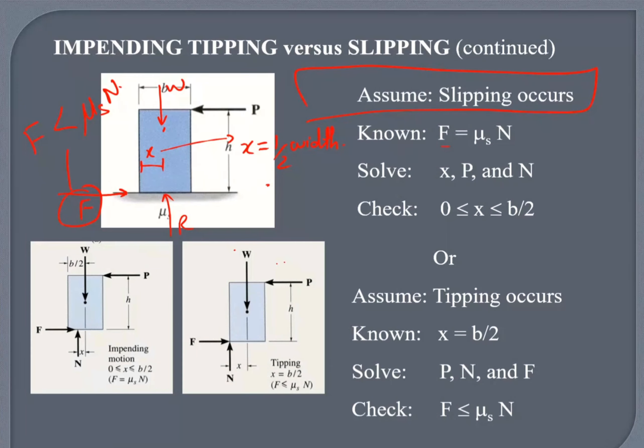So if I assume it's going to tip, I can use this. That x is the distance of x is half width. And to check my assumption, I need to check this condition. Is the friction force less than mu Sn? If yes, my assumption is right.